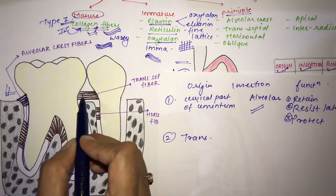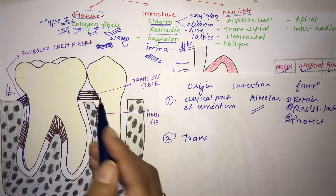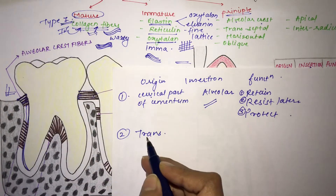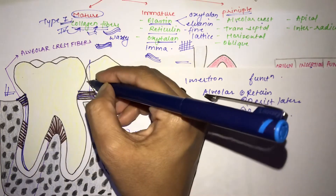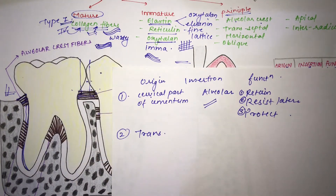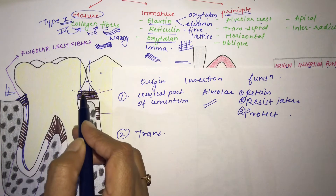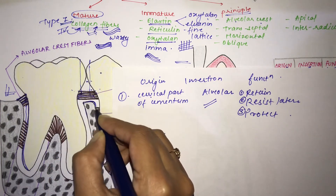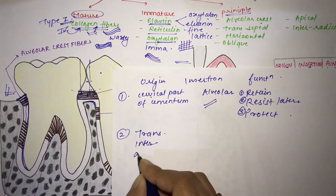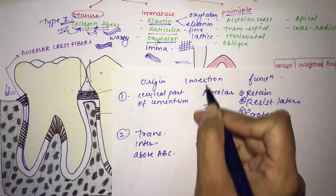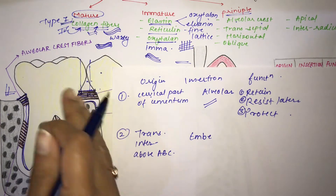The next fiber is the transseptal fiber. Transseptal fibers extend interproximately over the alveolar bone crest, connecting two adjacent teeth. The origin is interproximal, extending above the alveolar bone crest, and insertion is embedded into the cementum of the adjacent teeth.